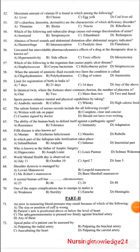The ability of the human body to defend against pathogens is known as: a) resistance, b) tolerance, c) immunity, or d) adaptation. The answer is c) immunity.